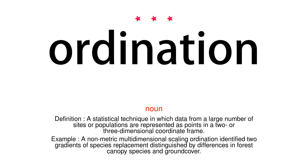Noun. Definition: A statistical technique in which data from a large number of sites or populations are represented as points in a two- or three-dimensional coordinate frame. Example: A non-metric multidimensional scaling ordination identified two gradients of species replacement distinguished by differences in forest canopy species and ground cover.